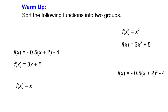You might have sorted them like this, and this would be a good way to sort them. Here we have the functions that have an x term, and here we have the functions that have an x squared term. This is the main difference between the two different types of functions shown here. And we can see in each group there's a function that is the simplest. In the first group, this is the simplest function.